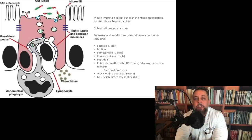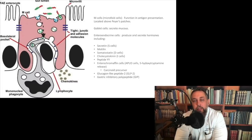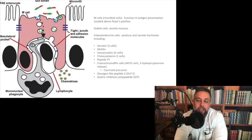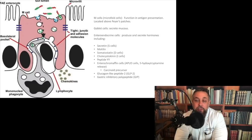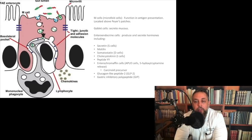M cells (microfold cells) function in antigen presentation and are located just above Peyer's patches. Goblet cells secrete mucus. Enteroendocrine cells produce and secrete many hormones including secretin from S cells, motilin, somatostatin from D cells, cholecystokinin from I cells, peptide YY, and gastric inhibitory peptide. APUD cells — amine precursor uptake and decarboxylase cells — have 5-hydroxytryptamine release and are carcinoid precursors. APUD cells are worth knowing about owing to the association with carcinoid.